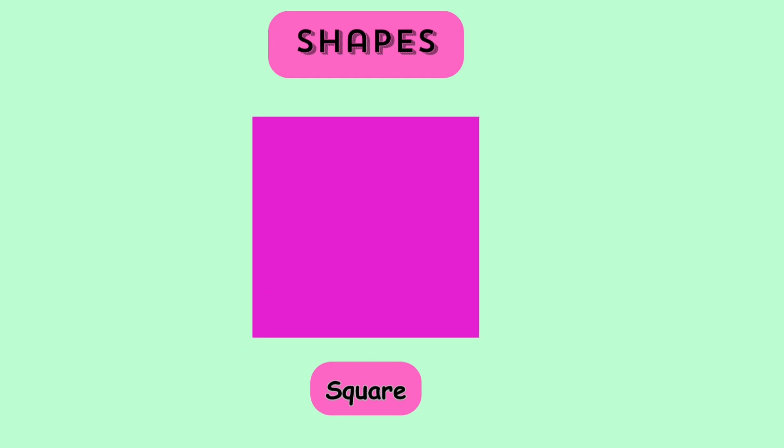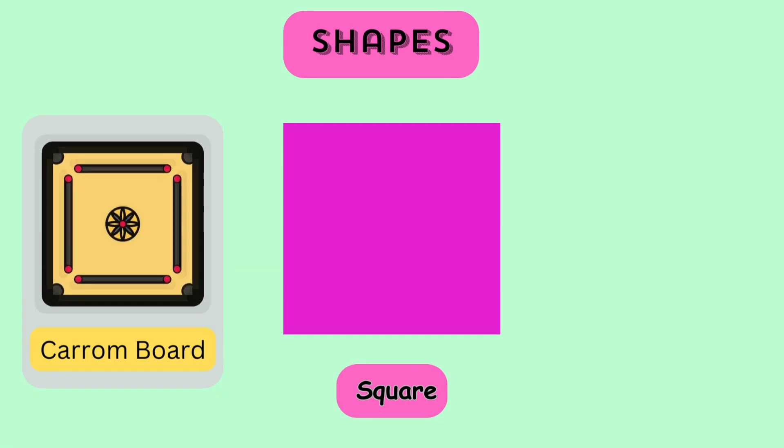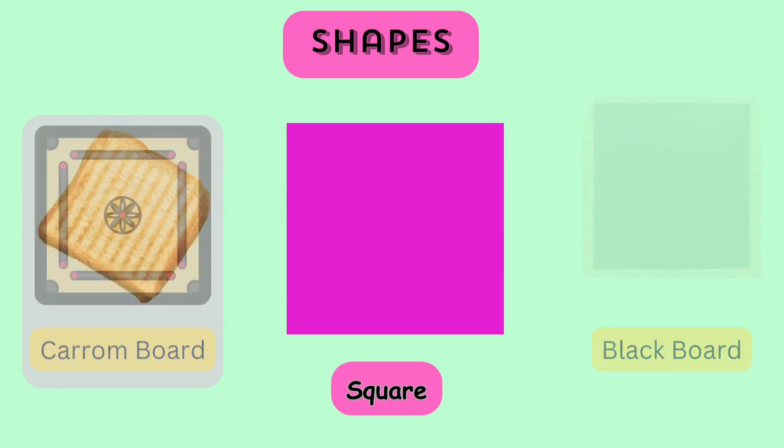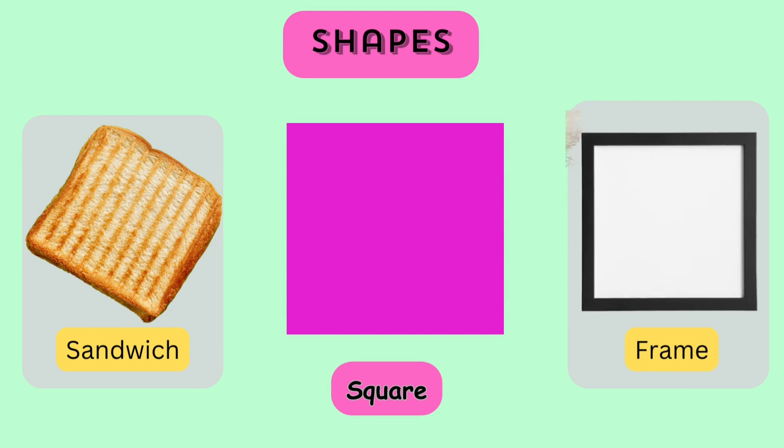Can you find something that is a square? Yes, a carom board. A blackboard. A sandwich. And even a photo frame.